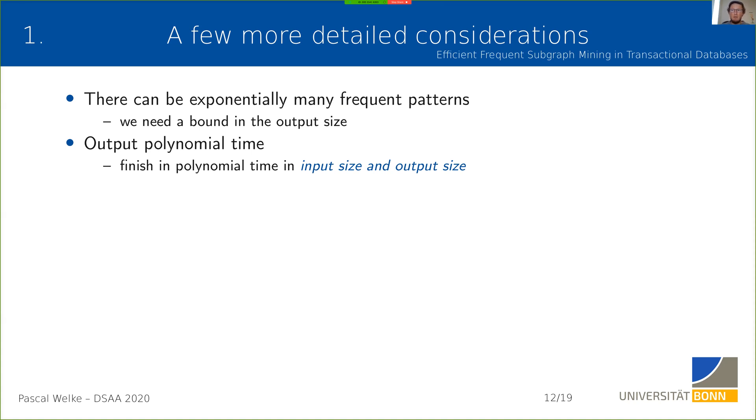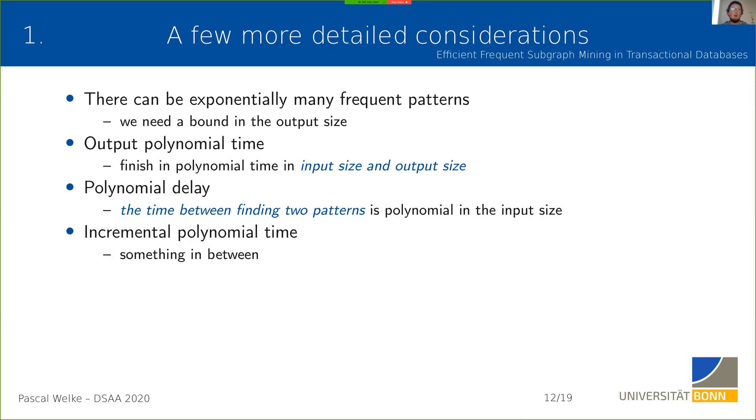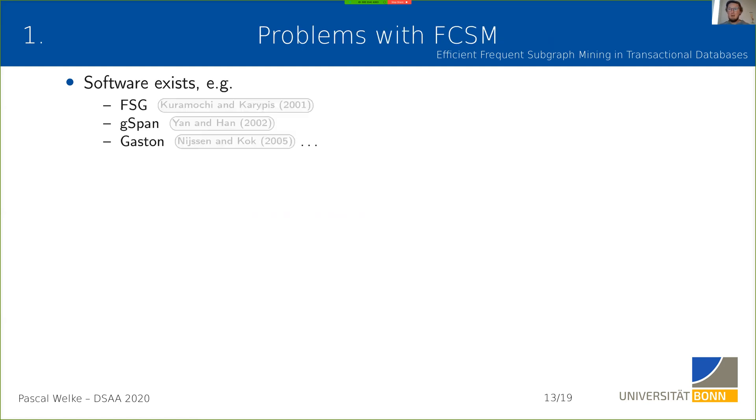More practical in my eyes is the definition of polynomial delay, where you bound the time between finding consecutive patterns by a polynomial in the input size. Basically, you start your algorithm, after a polynomial time in the input size you get the first result, then after a polynomial time again you get the second result, and so on. This is a useful notion for the definition of efficiency. There's also something in between: incremental polynomial time.